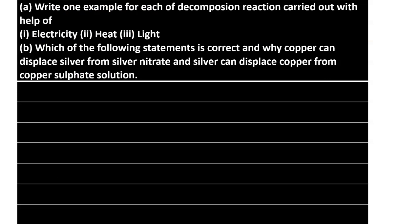Now the second question asks us to write one example each of decomposition reactions carried out with the help of electricity, heat, and light. For electricity: water (H2O) dissociates into H2 and O2 in the presence of electric current. We call this electrolytic decomposition.